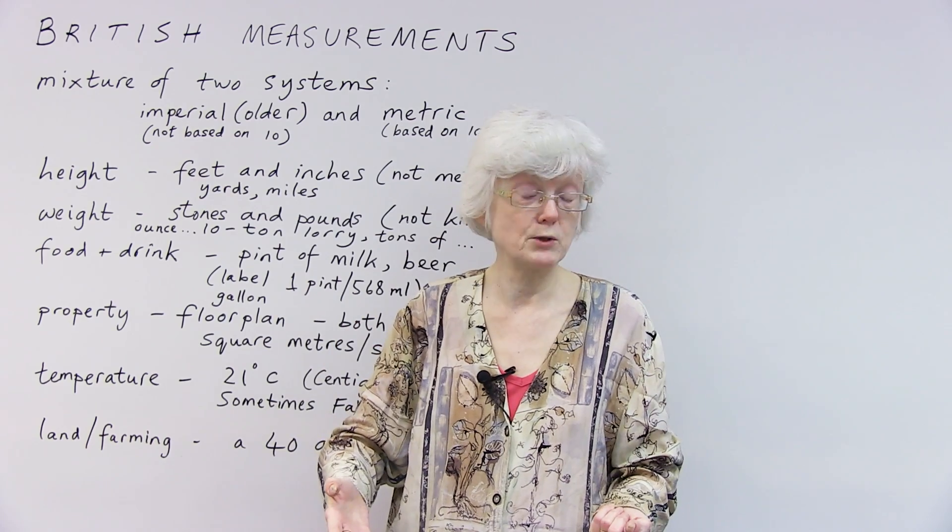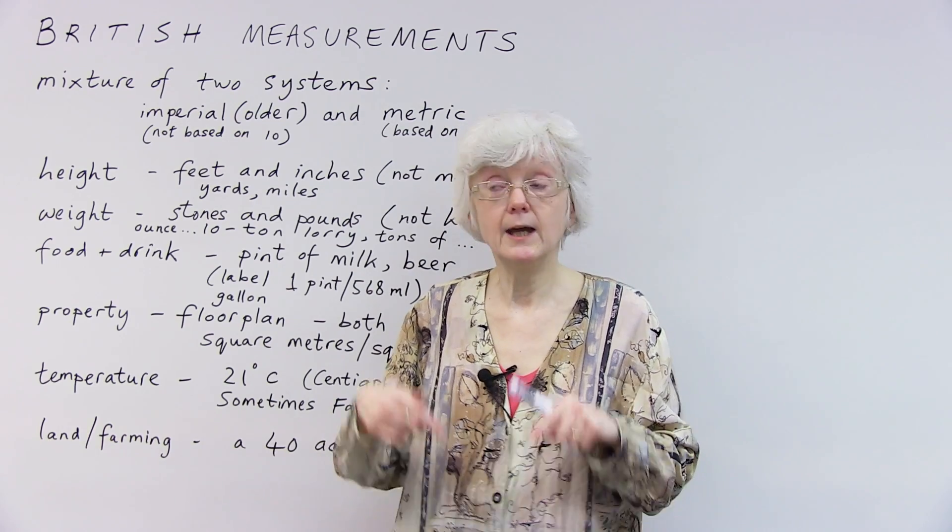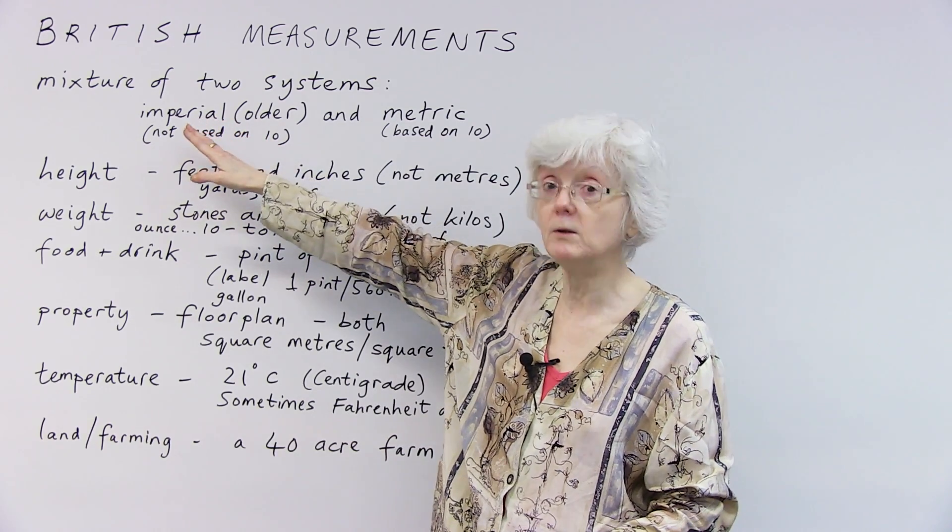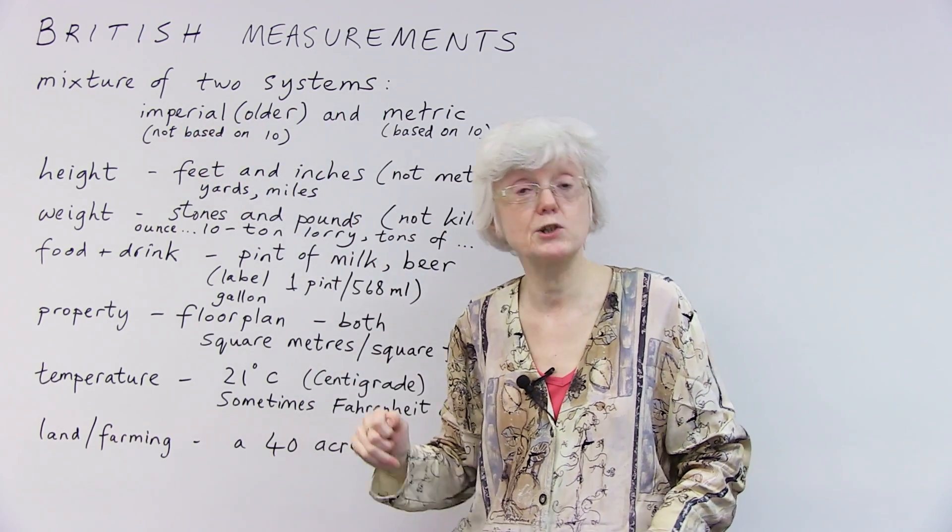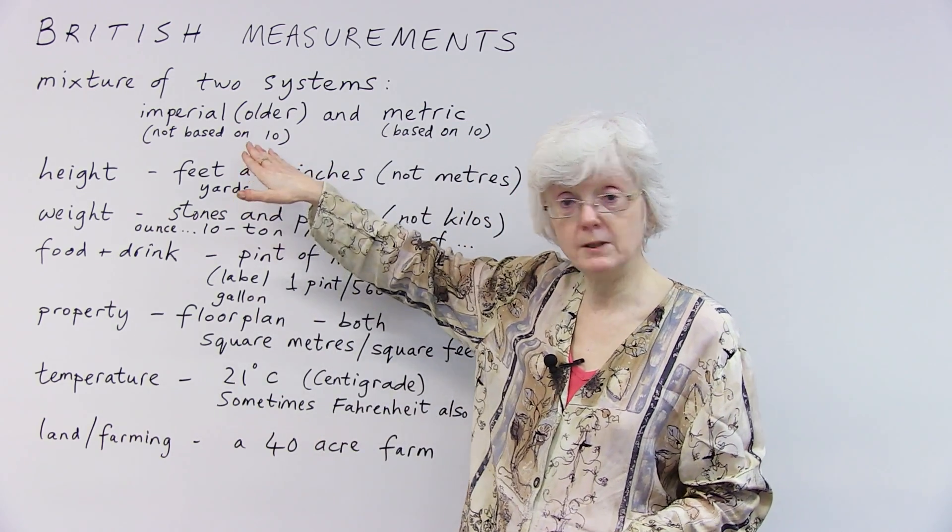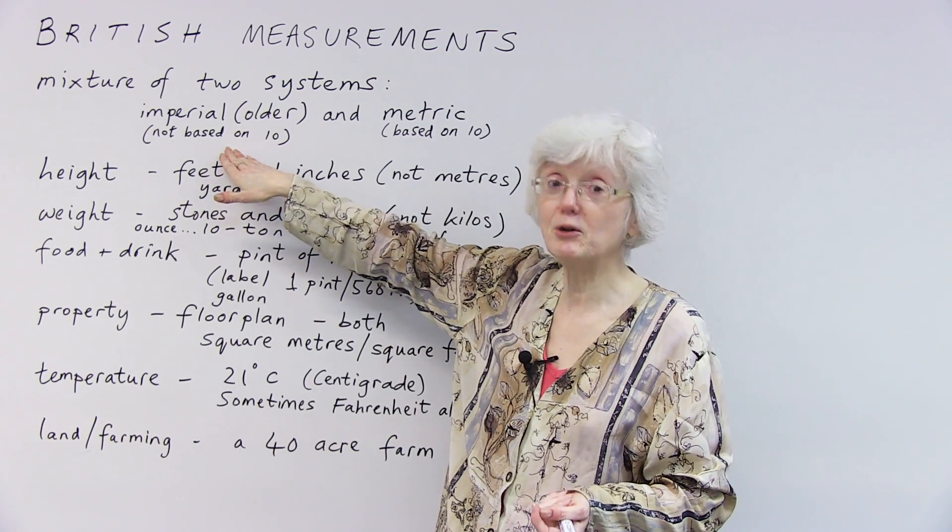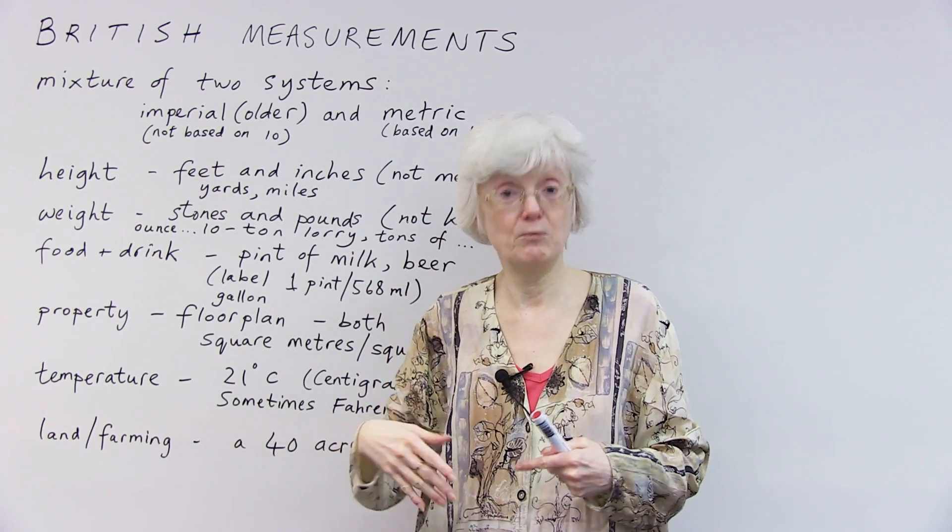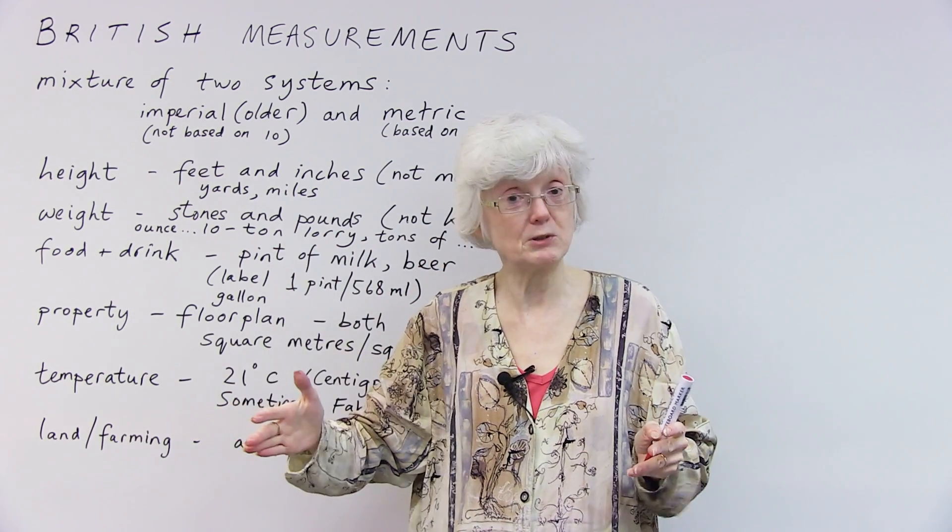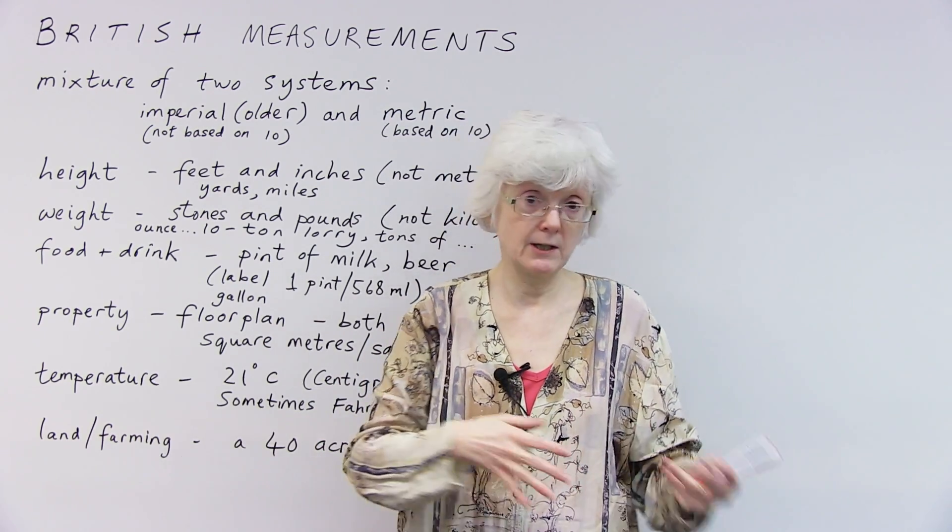I'm sure you have your own system in your country. You may use a similar system to us, but in the UK we actually now have a mixture of two systems, which makes it a little bit complicated. We have an older system called the imperial system, which is not based on ten. A lot of things from our old systems were not based on units of ten or a hundred or a thousand. A little bit like the old money that we used to have, which we're talking about in another lesson.